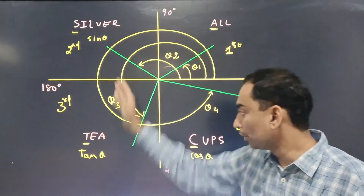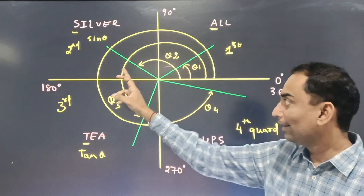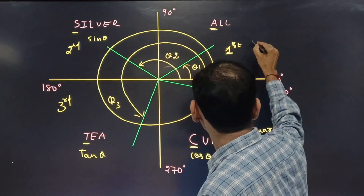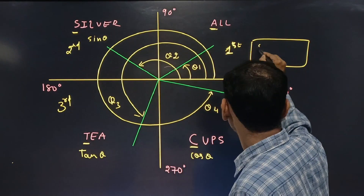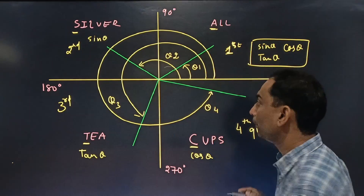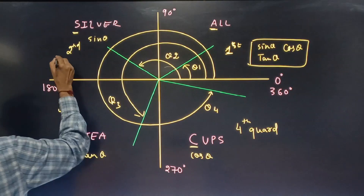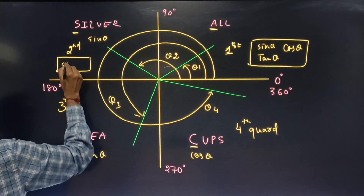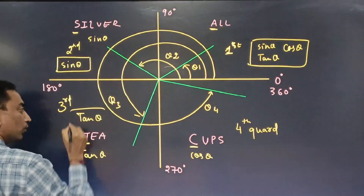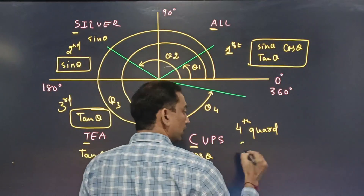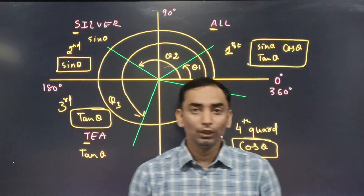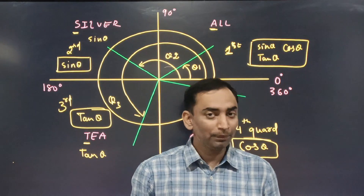To summarize: remember 'Add Sugar To Coffee' or 'All Silver Tea Cups.' In the first quadrant, sin θ, cos θ, and tan θ are all positive. In the second quadrant, only sin θ is positive. In the third quadrant, only tan θ is positive. In the fourth quadrant, only cos θ is positive — the rest are negative. That's all you need to remember.